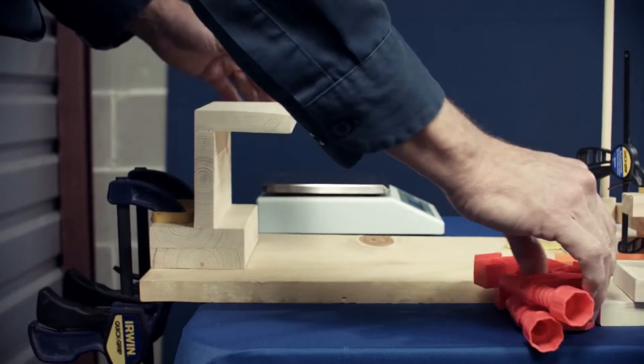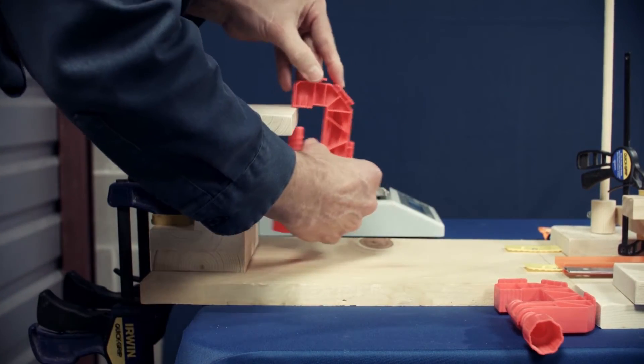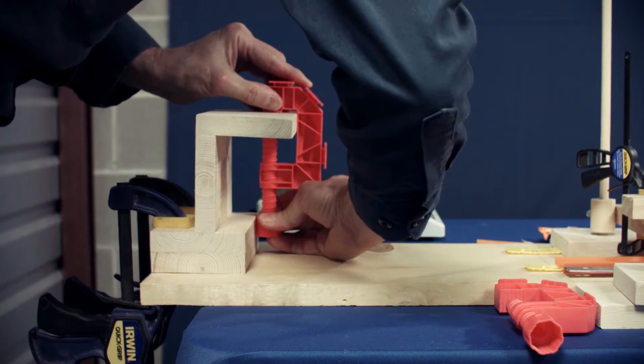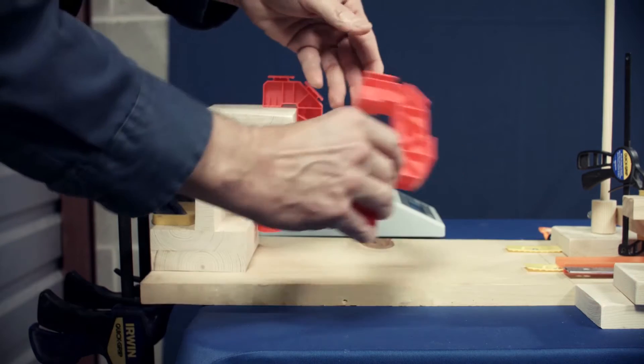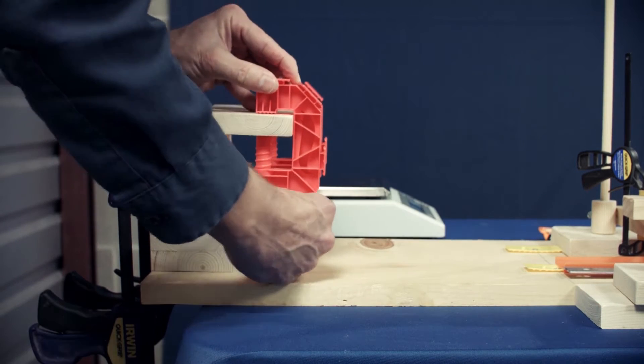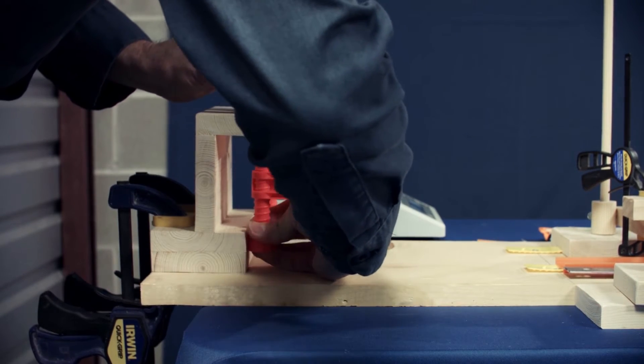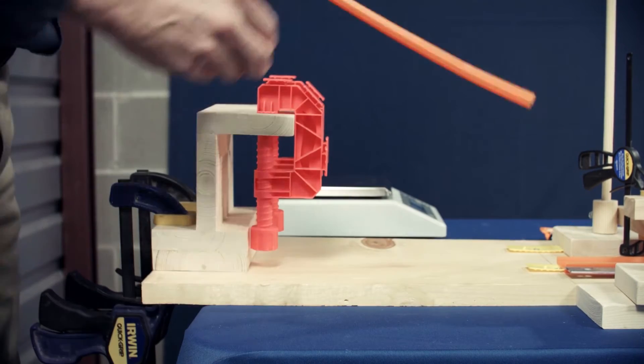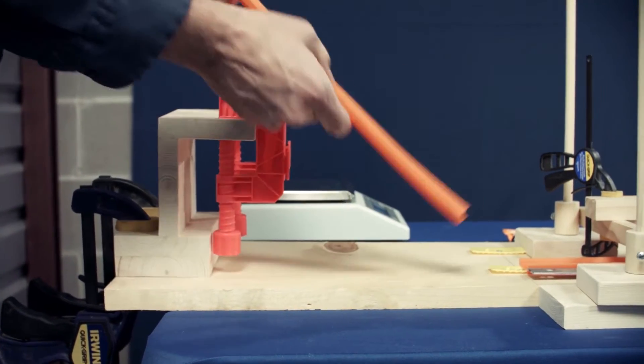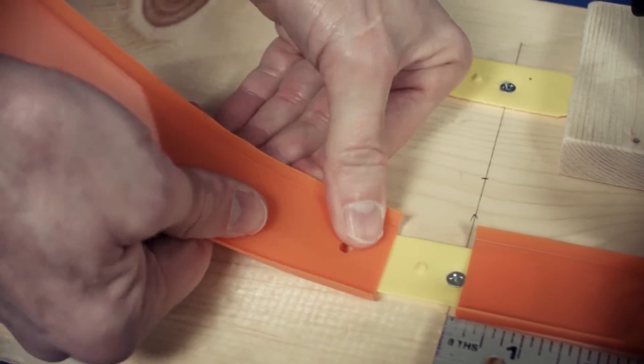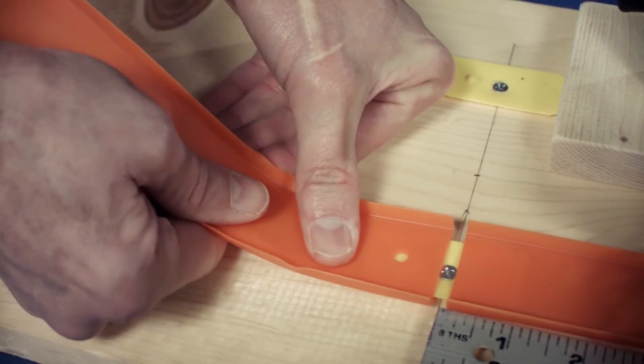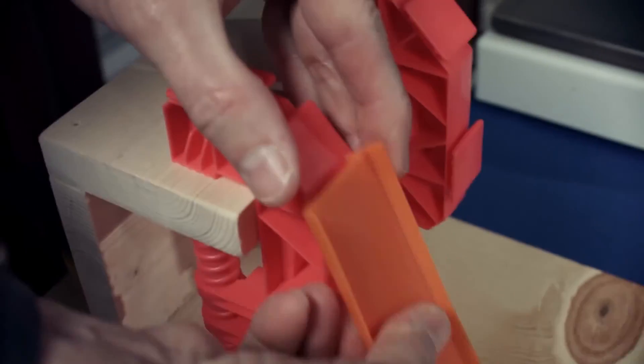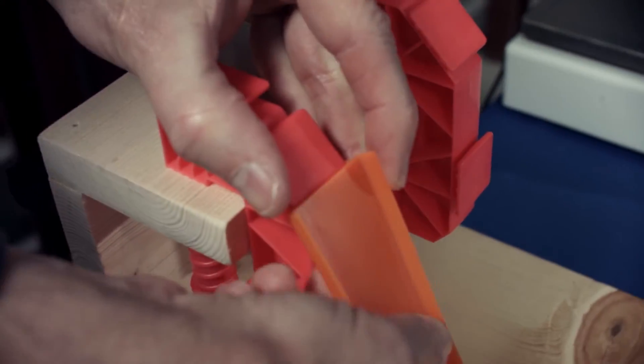Once it's secure, then we use the Hot Wheels clamps that come with the Hot Wheels track on here, and this is what we'll attach the track to. Now we're ready for the track. Just put the piece of track over the connector that's screwed to the board and then feed the track up onto the clamp.